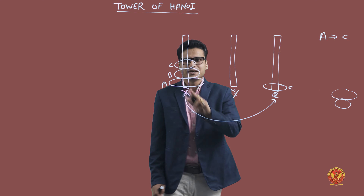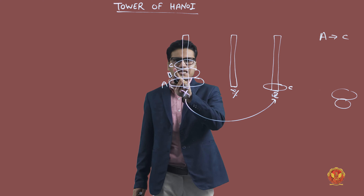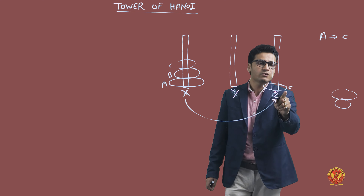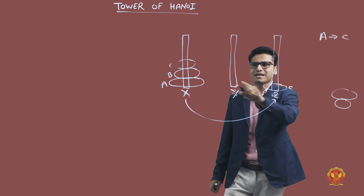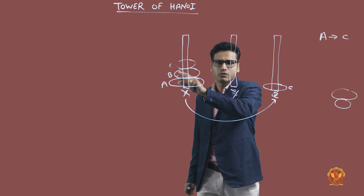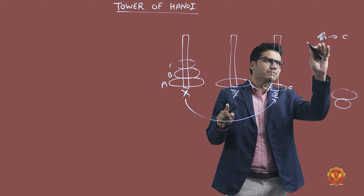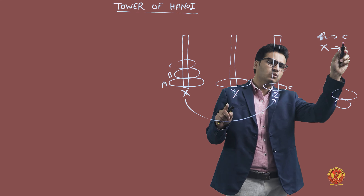As soon as plate C is moved to Z, what remains on rod X is plate B. Now I cannot move plate B directly to Z because the plate already on Z is smaller than plate B. So I move plate B from X to Y. First movement: X to Z. Second movement: X to Y.